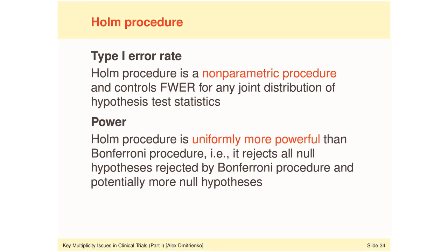Main properties of the Holm procedure: the Holm procedure is uniformly more powerful than the Bonferroni — it rejects all null hypotheses rejected by the Bonferroni and can potentially reject more. One might ask whether we pay a price for this uniform power gain — could the family-wise error rate be inflated? The answer is no. The Holm procedure was derived from the Bonferroni and therefore controls the family-wise error rate for any joint distribution of test statistics. This is the beauty and power of the closure principle: an inefficient procedure can be enhanced without compromising error rate control.